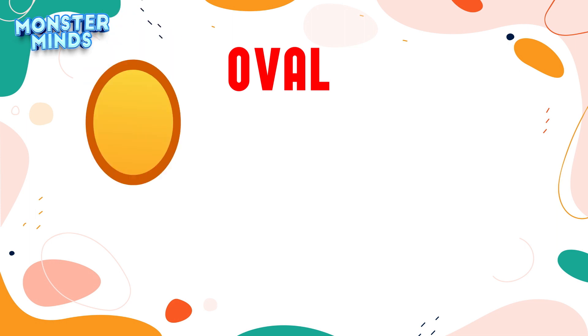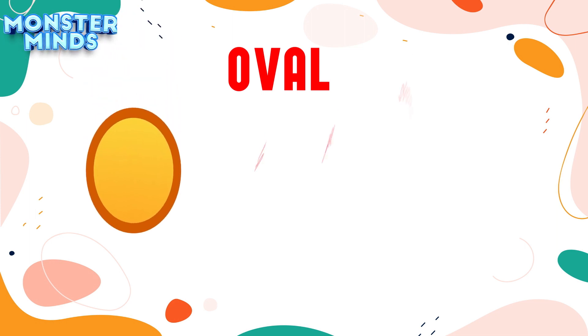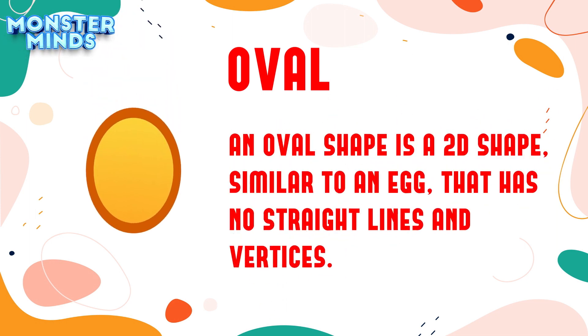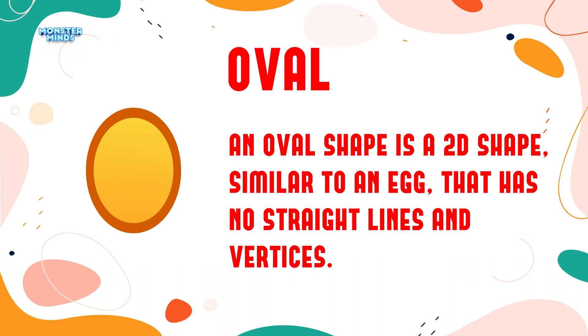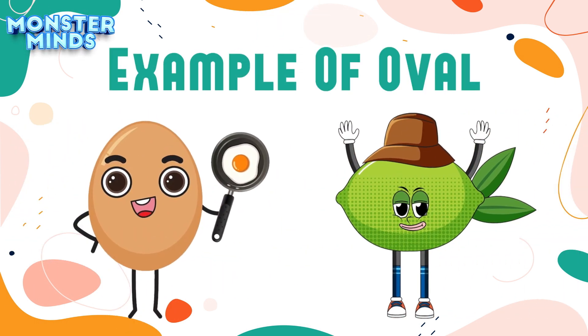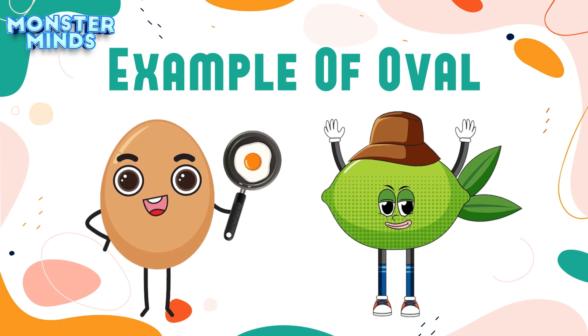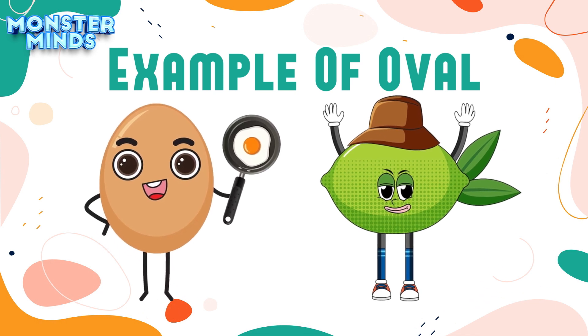Oval: An oval shape is a 2D shape, similar to an egg, that has no straight lines and vertices. Example of Oval.